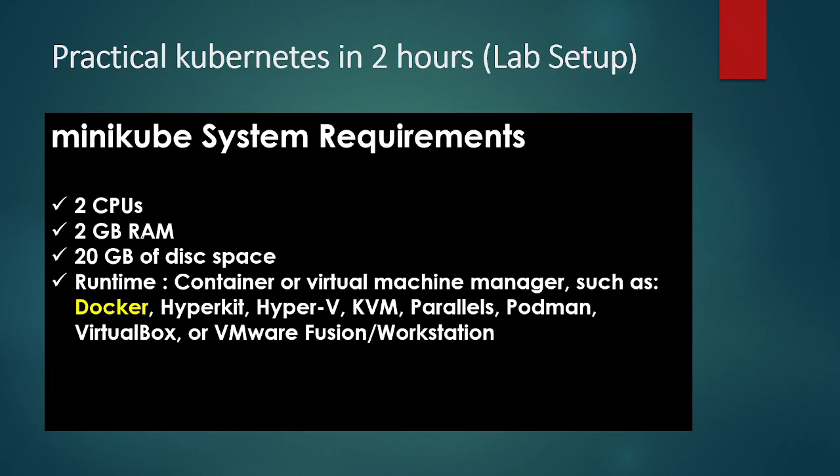This is just to make you a little familiar. These are the requirements for Minikube. For safety reasons, I have selected a machine which has got 16 GB of RAM, which will not give me any kind of slowness. You can also see that 20 GB of disk space is required, so I am basically making use of 50 GB of EBS volume. You can pretty much use any of the runtime environments, but I am making use of Docker as a runtime.